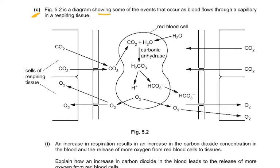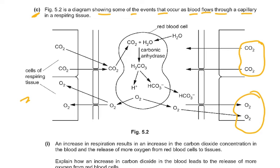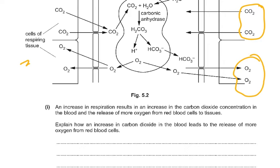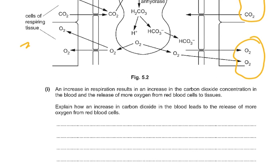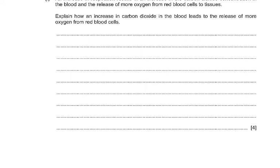Figure 5.2 shows events as blood flows through a capillary in a respiring tissue. Carbon dioxide enters the blood from respiring cells; CO2 and water combine in the presence of carbonic anhydrase to form carbonic acid (H2CO3), which dissociates into H+ and HCO3- ions. The HCO3- ions diffuse out, and oxygen leaves the red blood cells. An increase in respiration increases CO2 concentration in the blood. Explain how an increase in CO2 leads to a release of more oxygen from red blood cells - this is a 4-mark question.